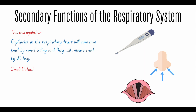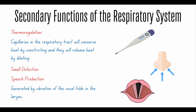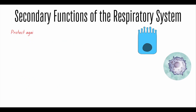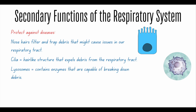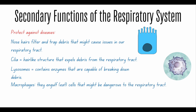Other secondary functions include detecting smells and speech production. Speech production is generated by vibrations of the vocal folds within the larynx. The respiratory system also provides protection against disease. Hairs in our nostrils serve as a filter that traps debris with mucus. We also have cilia, which are hair-like structures that expel debris lined up in the respiratory tract. Lysozymes, found within the mucus, break down debris. Macrophages are phagocytes that engulf and protect the lungs from dangerous particles. And lastly, goblet cells secrete mucus.